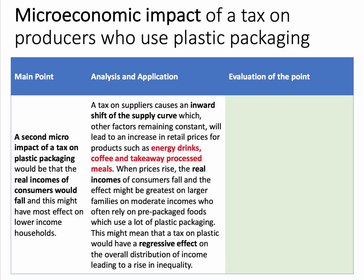Often those families have quite a strong income elasticity for that kind of food, and those foods use a lot of plastic packaging. This might mean — and 'this might mean' is a good connected phrase — that the tax on plastic would have a regressive effect on the overall distribution of income, leading to a rise in inequality. So my micro point here is that the tax on plastic packaging, particularly on processed takeaway foods, could have a regressive effect on bigger families who rely on that kind of food from the supermarket.